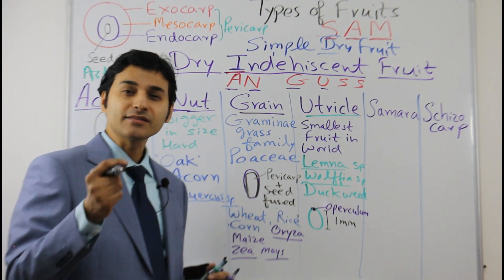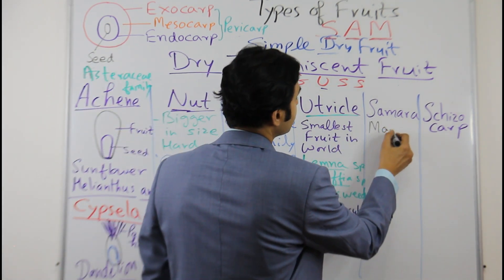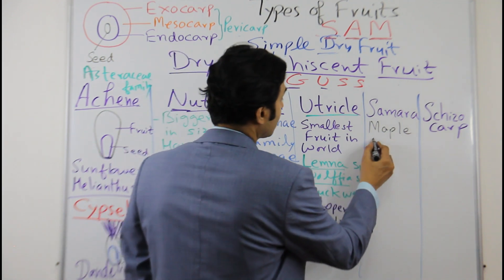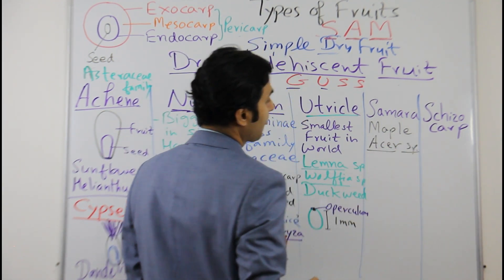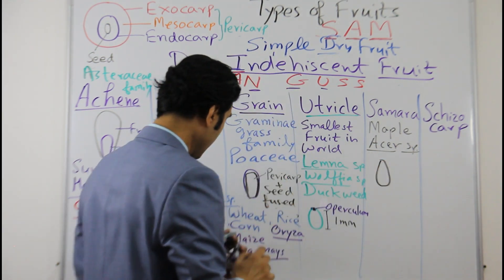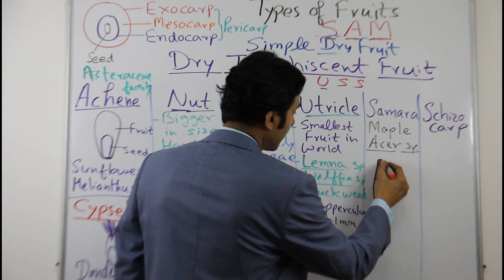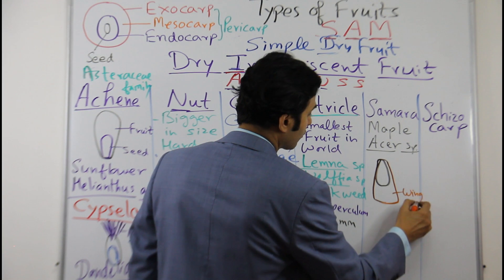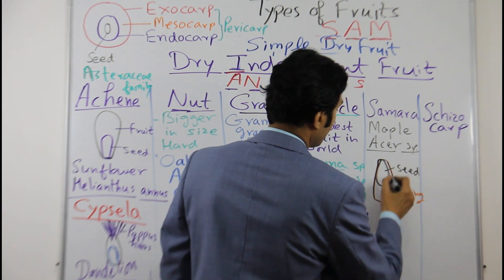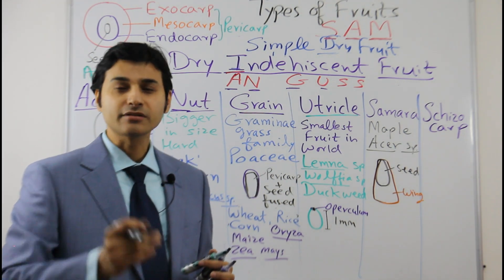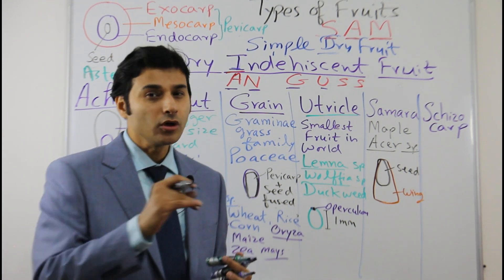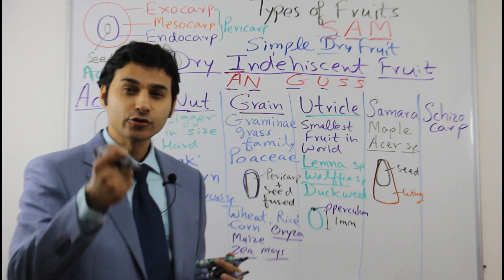Next is samara, a type of fruit found in maple (Acer species — e.g., Acer oblongum), which you can also see on the national flag of Canada. Samara has a wing-like extension attached to the seed. This wing is an extension of the seed coat made of sclerenchyma cells, which helps in wind dispersal. You will find more videos on plant tissues — parenchyma, collenchyma, and sclerenchyma — with detailed concepts and memory tricks.